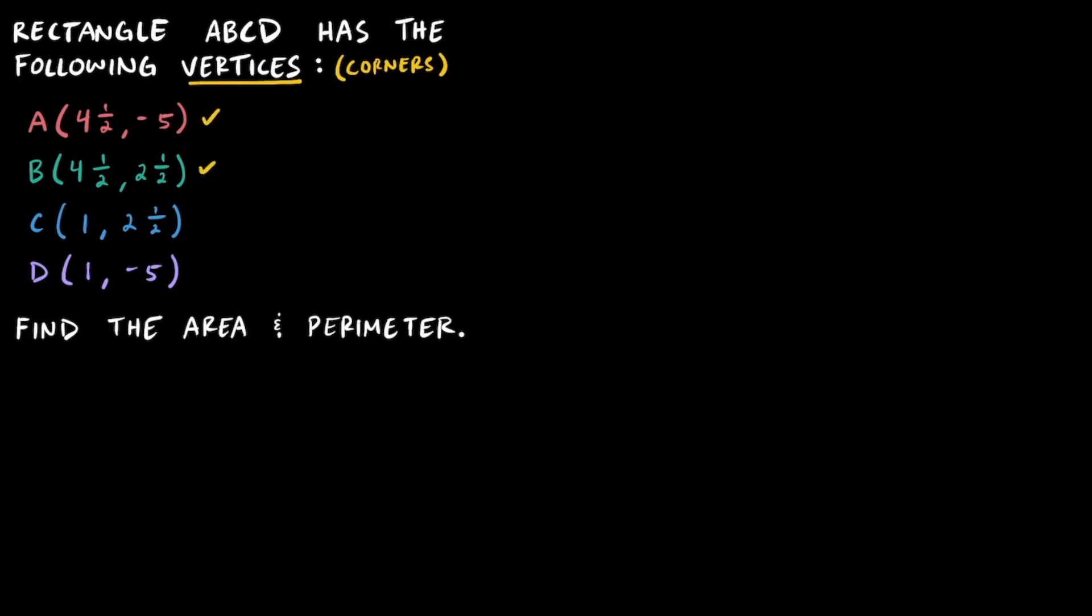Points A, B, C, and D will be the corners or the vertices of this rectangle. Our goal is to use these four vertices to find out the area and the perimeter of this rectangle.